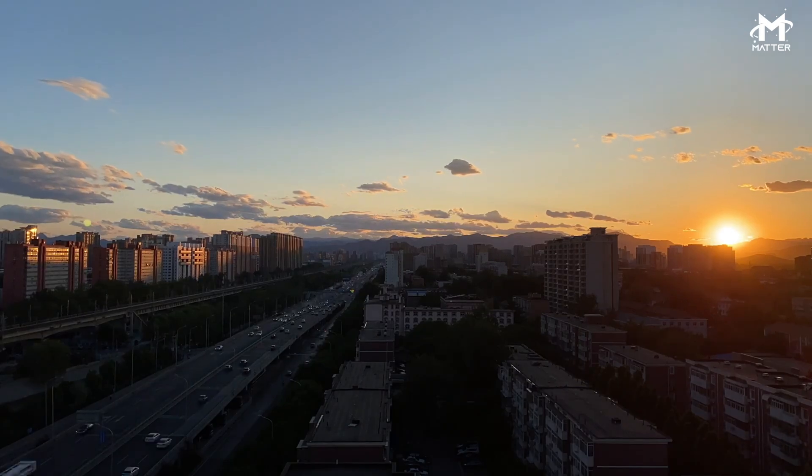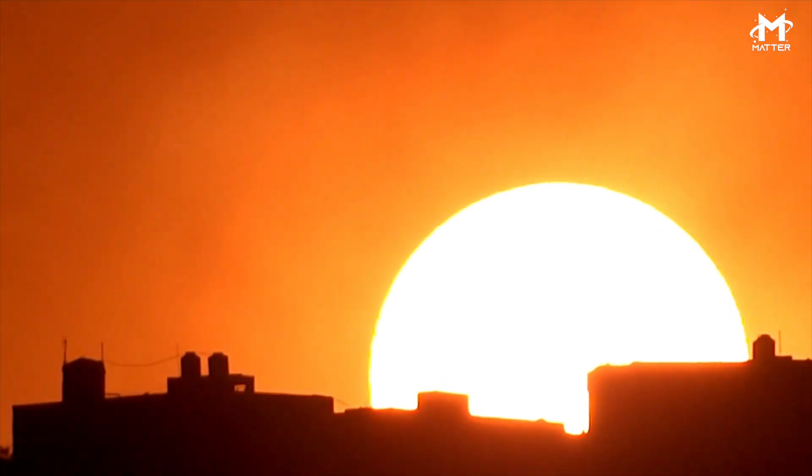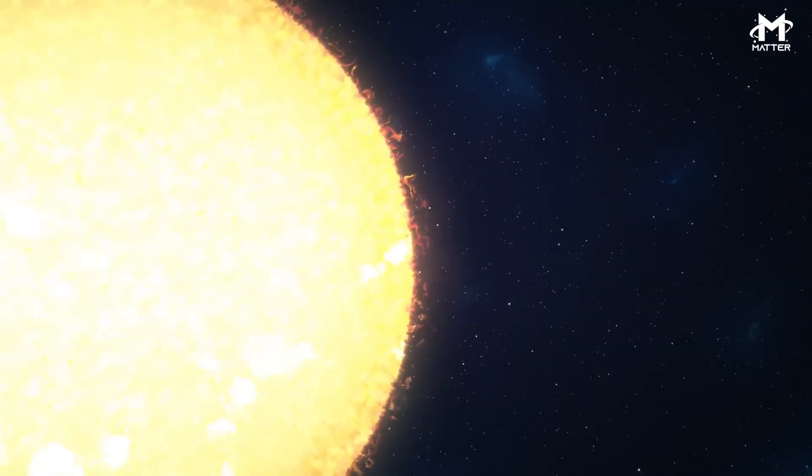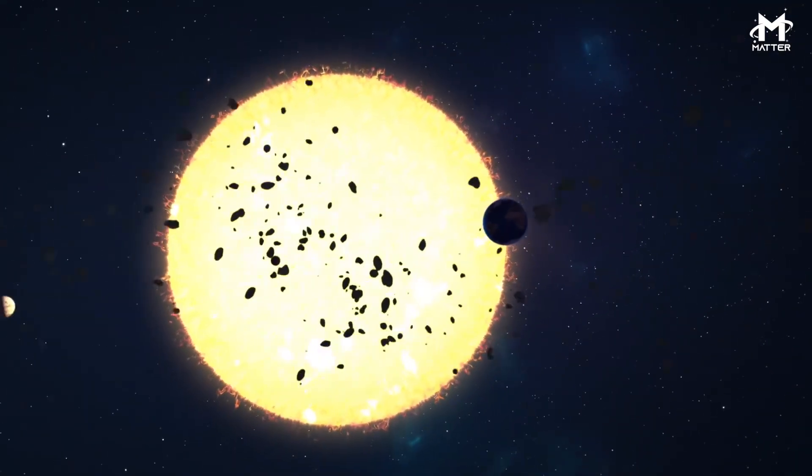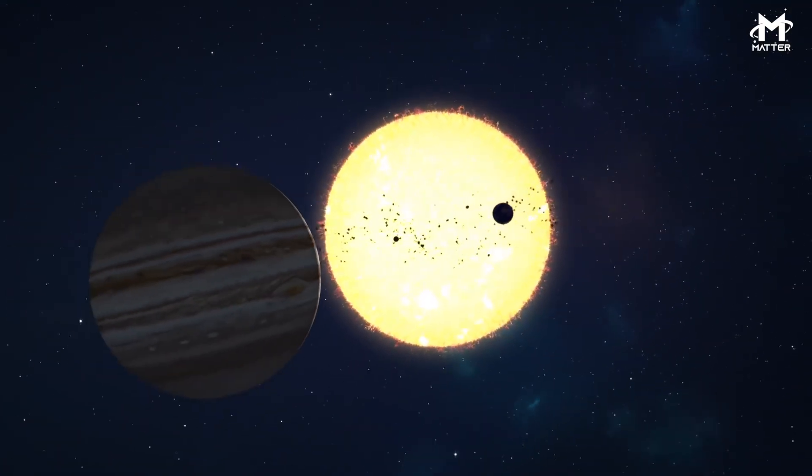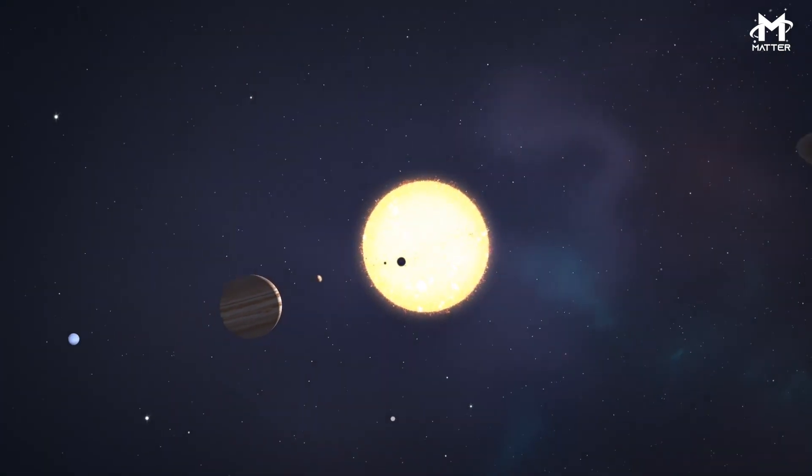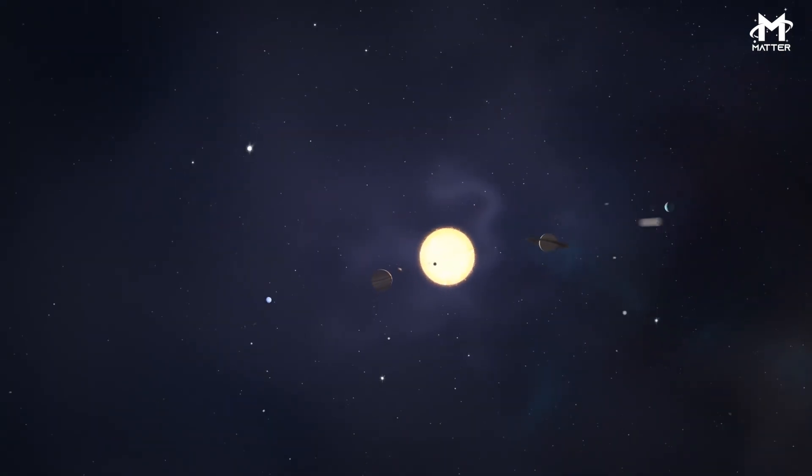We all know that the Sun is massive, but exactly how big it is can be pretty challenging to wrap our heads around sometimes. The Sun is a yellow dwarf star, around 5 billion years old, and is responsible for allowing life to flourish on Earth and sending its light and warmth to the other planets in the solar system.